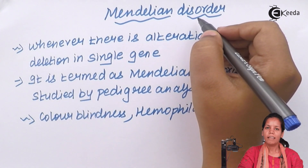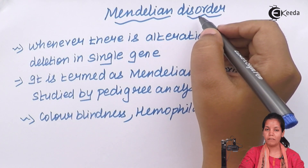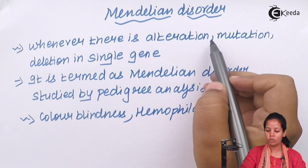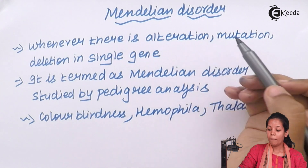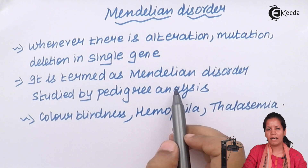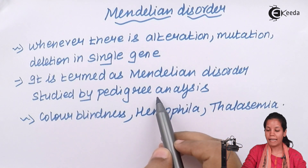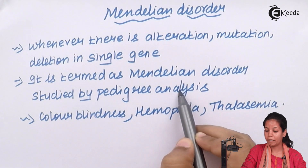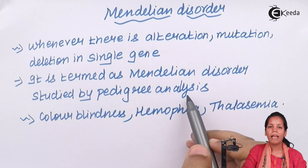Mendelian disorders clearly and precisely focus on alteration, deletion, or mutation in a single gene. Only a single gene is involved. Mendelian disorders can be classically studied by pedigree analysis or karyotyping. Through pedigree analysis or karyotyping, Mendelian disorders arising from alteration, deletion, or mutation can be examined and a cure or at least precautions can be determined.